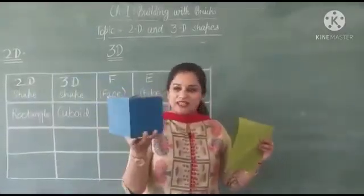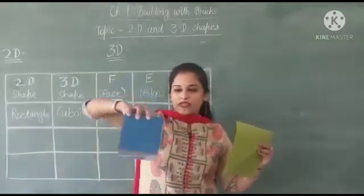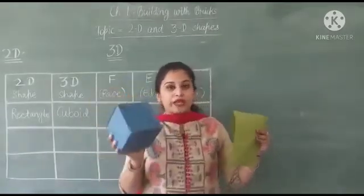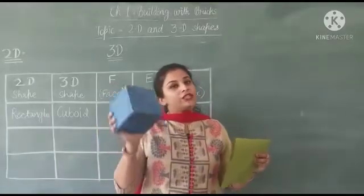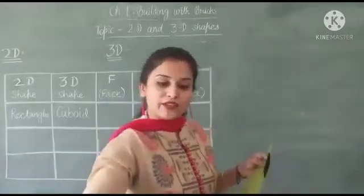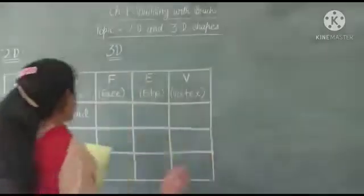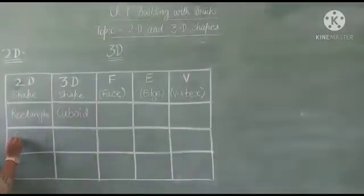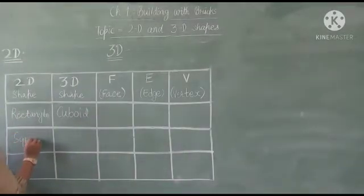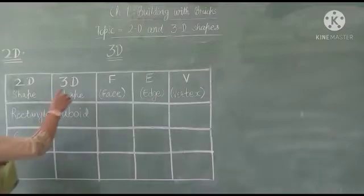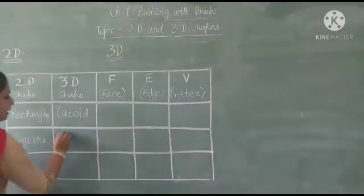it will be like this. You can see. See, all of these spaces have squares. So what do we call it? We call it cube. So we will write it that second 2D shape is square. And the 3D shape of square will be cube.